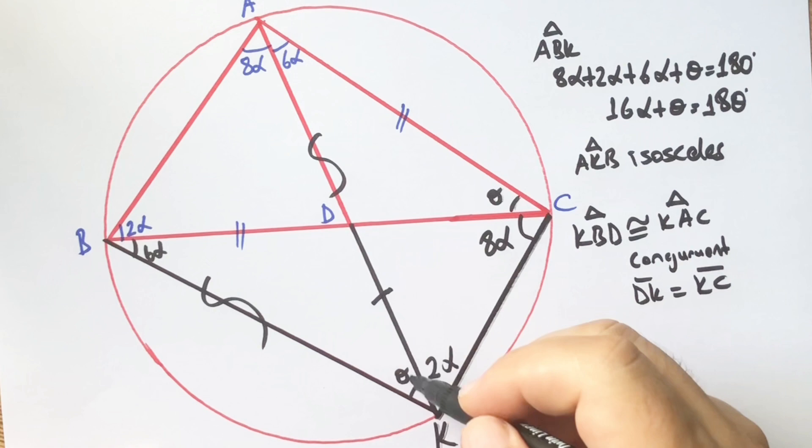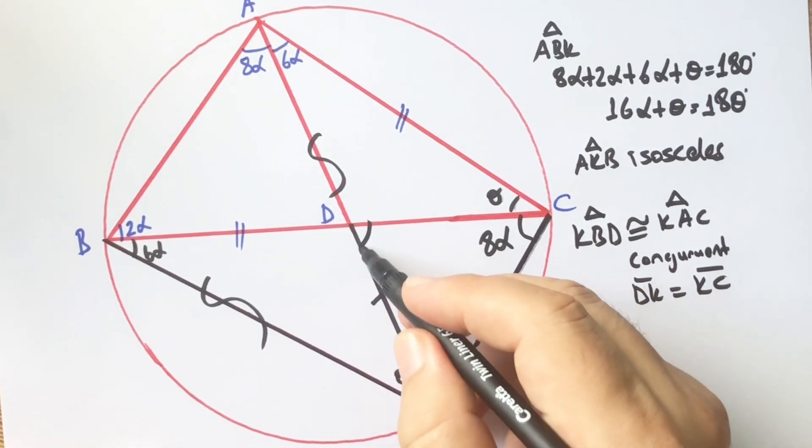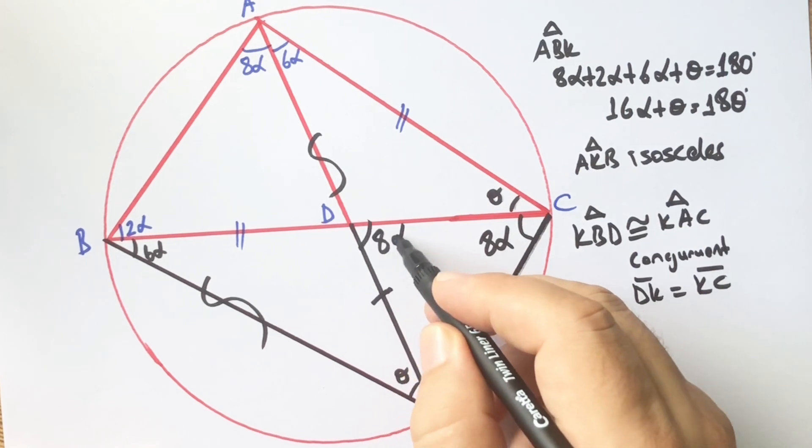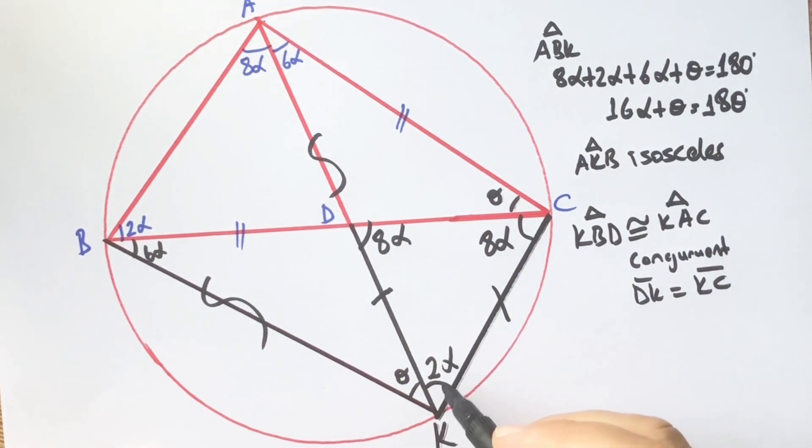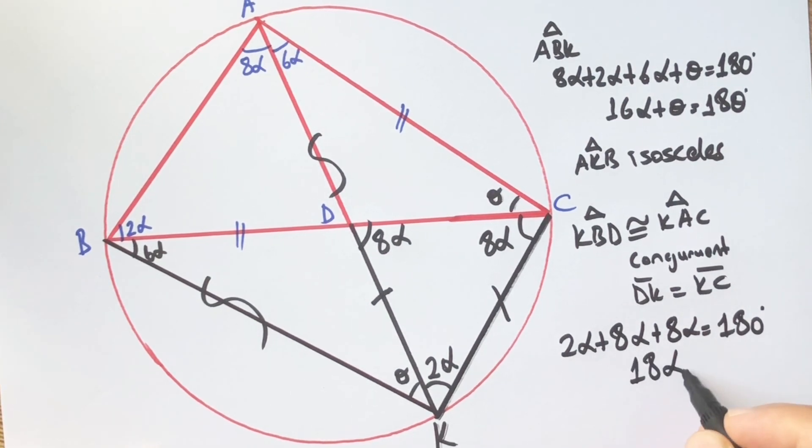Finally, we get an isosceles triangle. So 2α plus 8α plus 8α equals 180 degrees. Therefore, α is going to be 10 degrees.